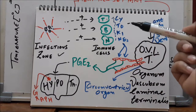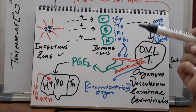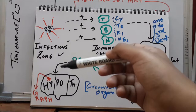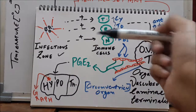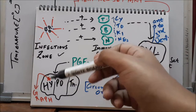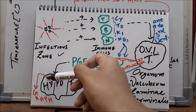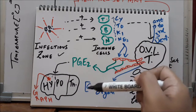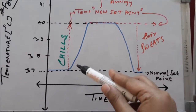Prostaglandin E2 is an end product of arachidonic acid metabolism, which is fundamental to biochemistry. PGE2 then stimulates the anterior nucleus of the hypothalamus, which increases the set point of the body. This is the thermoregulation center of the hypothalamus, and it corresponds to the rise we see on the graph.